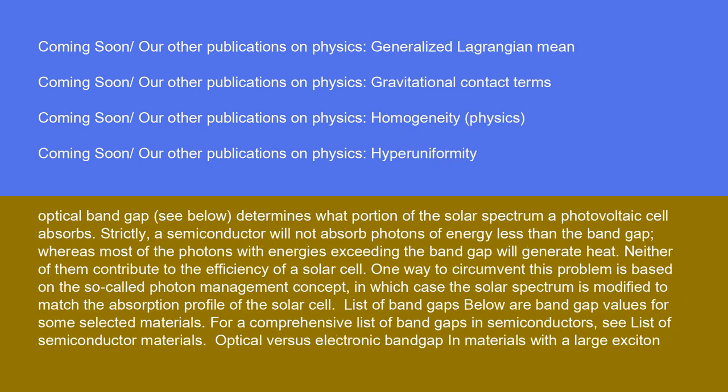For photovoltaic cells, the optical band gap determines what portion of the solar spectrum a photovoltaic cell absorbs. A semiconductor will not absorb photons of energy less than the band gap, whereas most of the photons with energies exceeding the band gap will generate heat. Neither contribute to the efficiency of a solar cell. One way to circumvent this problem is based on the photon management concept, in which the solar spectrum is modified to match the absorption profile of the solar cell. Below are band gap values for some selected materials. For a comprehensive list of band gaps in semiconductors, see list of semiconductor materials.